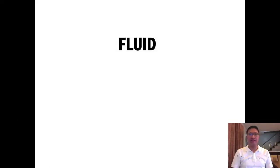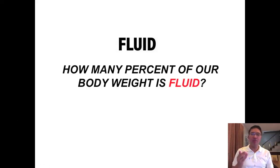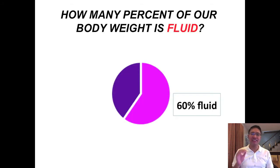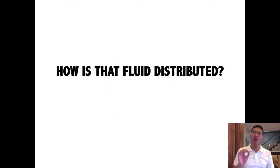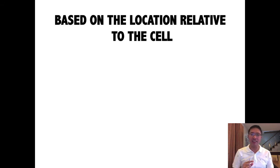Let's talk about fluid. How many percent of your body weight is fluid? The answer is 60%. 60% of our body weight is fluid. So if you weigh 100 pounds, then 60 pounds of your weight is fluid. But how is that fluid distributed inside the body?